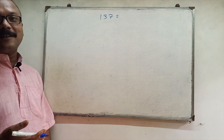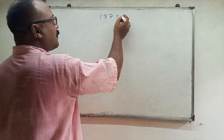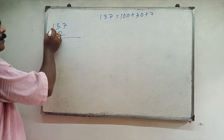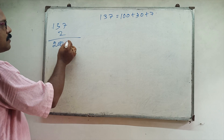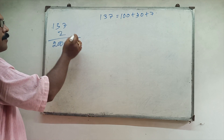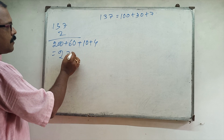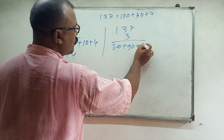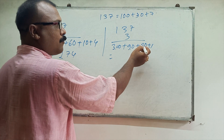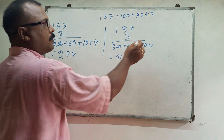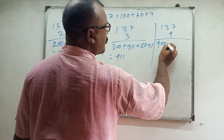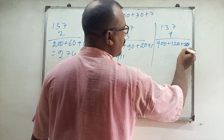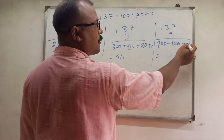Let me tell you the 137 table. 137 means 100 plus 30 and 7. 137 twos: 200 plus 60 plus 14, so 274. 137 threes: 300 plus 90 plus 21, so 411. 137 fours: 400 plus 120 plus 28, so 548.